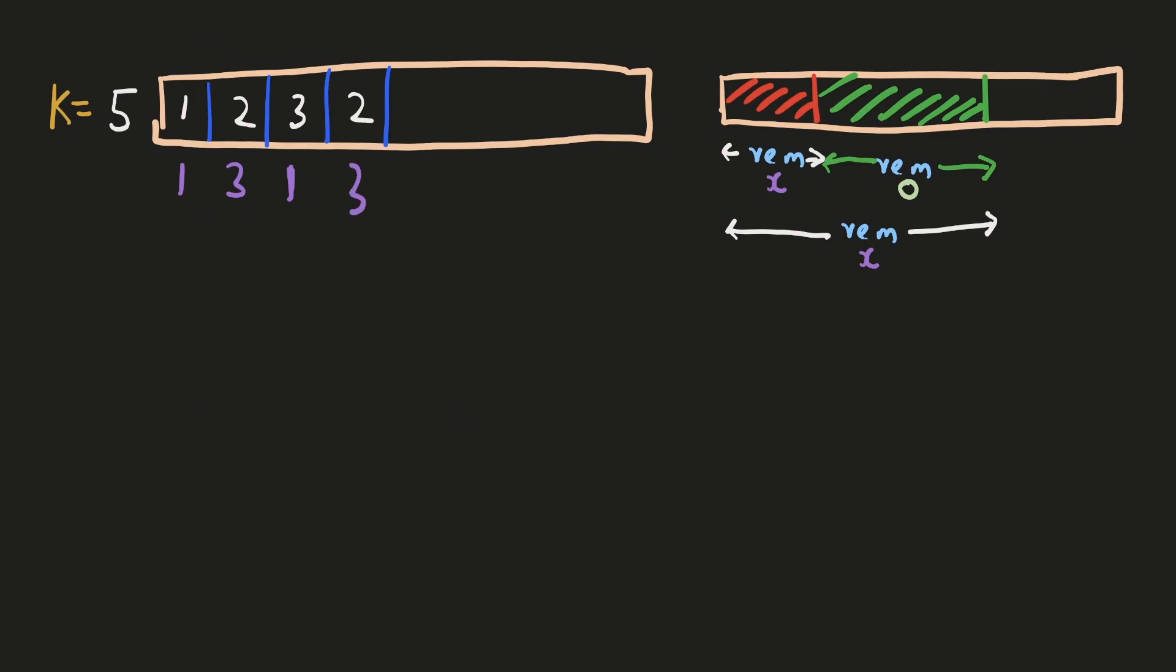Similarly, when we calculate the remainder of the next prefix sum, we see that we have already encountered this before, so this subarray has to be a multiple of 5. Now let's see what happens when we encounter the same remainder again. In this case, we see that we have two occurrences of the same remainder before. So it means that we can have two different subarrays ending at our current number which is divisible by 5.